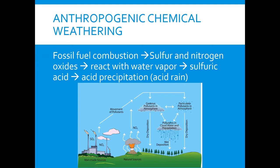There's also anthropogenic chemical weathering — anthropogenic means human caused. When fossil fuels combust, sulfur and nitrogen oxides are released into the atmosphere. These react with water vapor creating sulfuric acid, which is acid rain. Coal plants typically produce a lot of this pollution. You can also get it from natural sources like volcanoes, but once it's in the air it reacts with water to create acid deposition. There can also be dry deposition depending on whether it reacts with water or not.